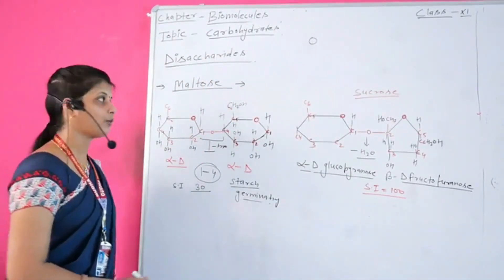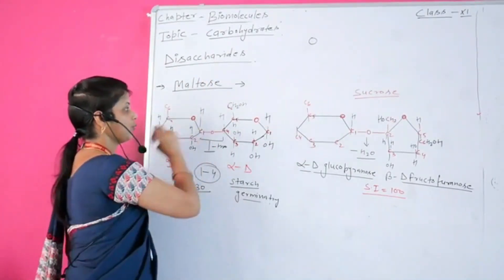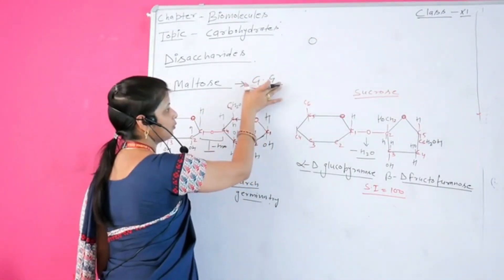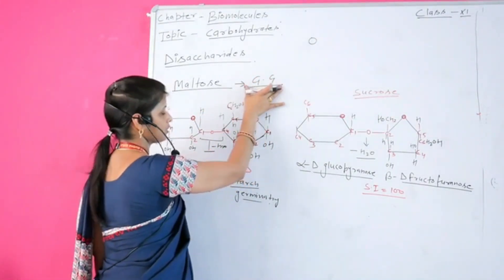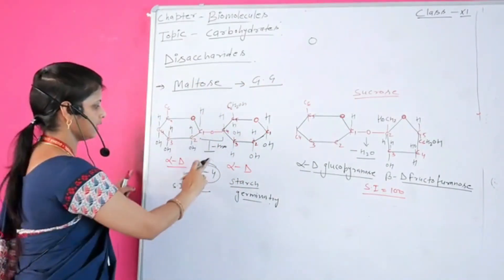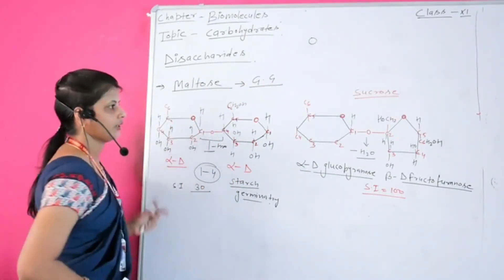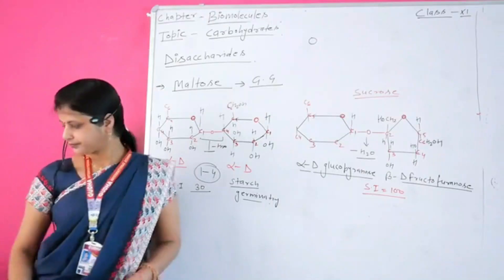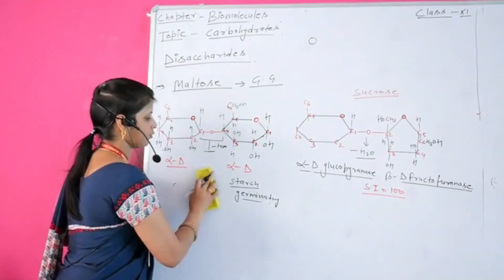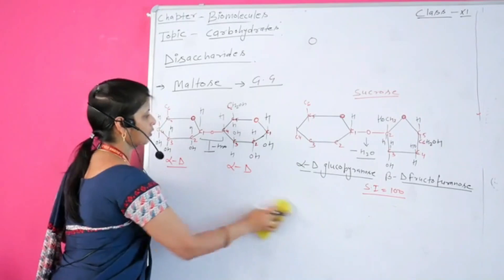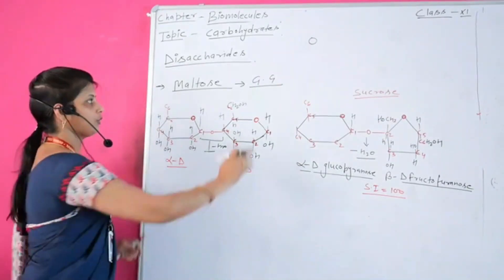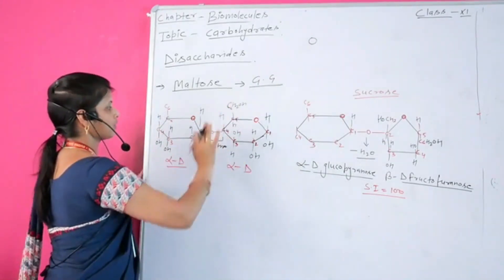Maltose is an example of a disaccharide because it forms from two molecules of glucose. Two molecules of glucose combine and form a single structure of maltose. So the formation of one molecule of maltose sugar involves the combination of two molecules of glucose.